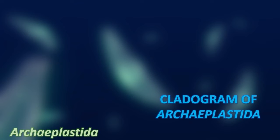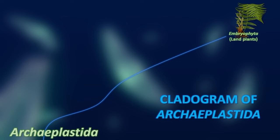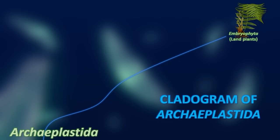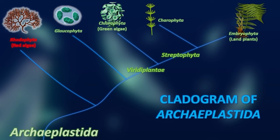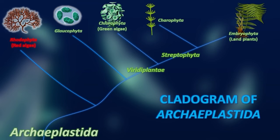Algae are in fact a polyphyletic group with no real defined common ancestor. Four monophyletic groups are currently known. The first one, in which land plants emerge, are the archaeoplastida, composed of three monophyletic clades: chlorophyta — the so-called green algae — glaucophyta, and finally the rhodophyta or red algae. Then we have a huge distant group which does not share clear relationships with archaeoplastida.